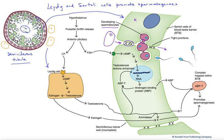Let's talk about the regulation of this process. We focus first on the hypothalamus and its release of gonadotropin-releasing hormone into a portal capillary system that delivers it to the anterior pituitary. The anterior pituitary in response releases LH from one cell type and FSH from another. LH acts specifically on the Leydig cells and stimulates a rate-limiting enzyme that leads to the production of testosterone.